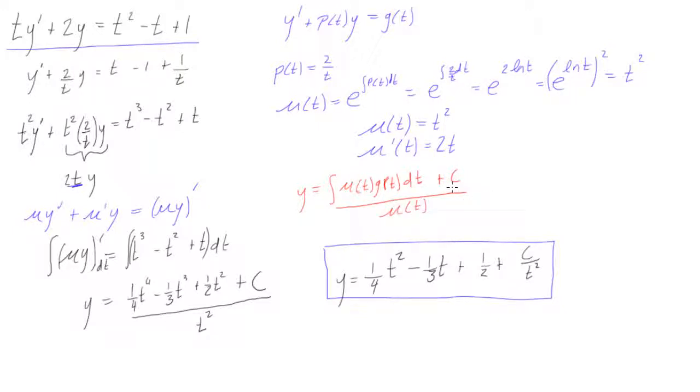Alright, and we know, because we'll be given, once we are able to rearrange it into this form, we'll be able to find out what μ(t) is, exactly what we did, and so we know that μ(t) is equal to e, like we said, to the integral of p(t) dt.